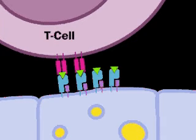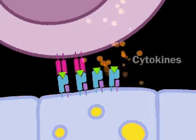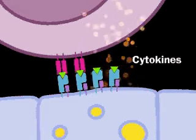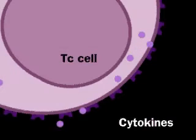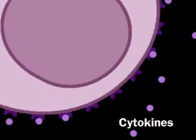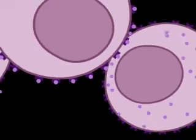Once the T cell has docked, the antigen-presenting cell releases cytokines, chemical signals that activate the T cell. The activated T cell produces another cytokine and receptors for it. This cytokine causes the T cell to divide, rapidly producing a clone of cells that are identical to the first T cell in genetic makeup and immunologic specificity. Production of this clone completes the activation phase of the cellular immune response.